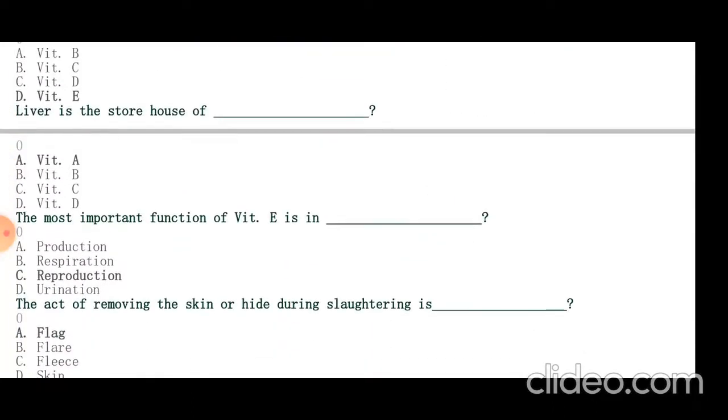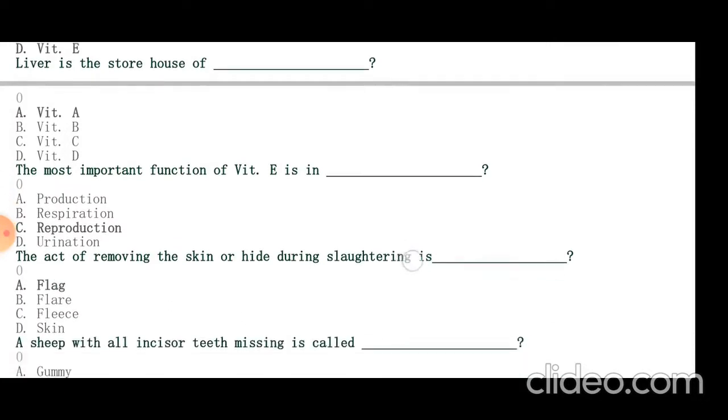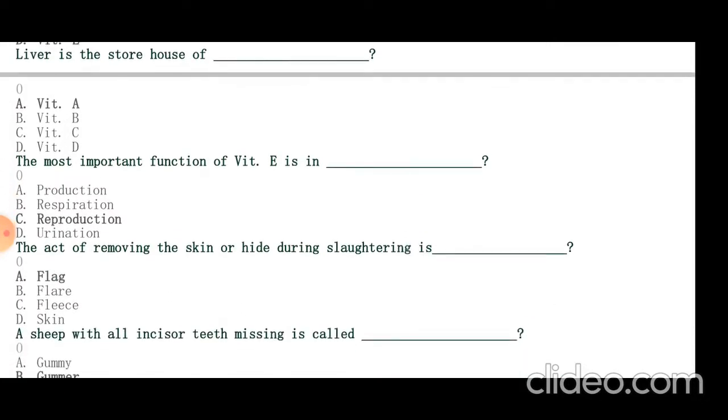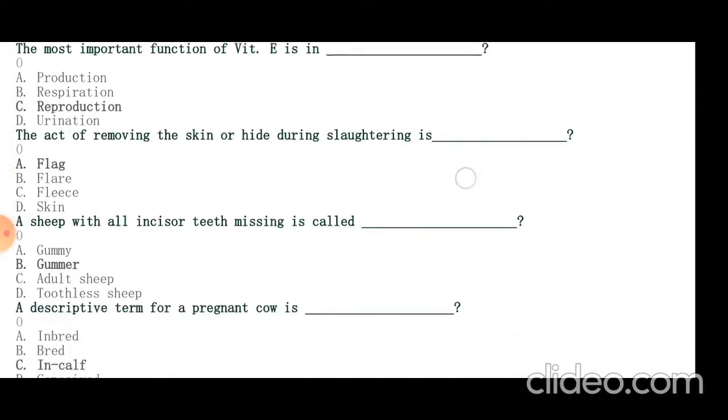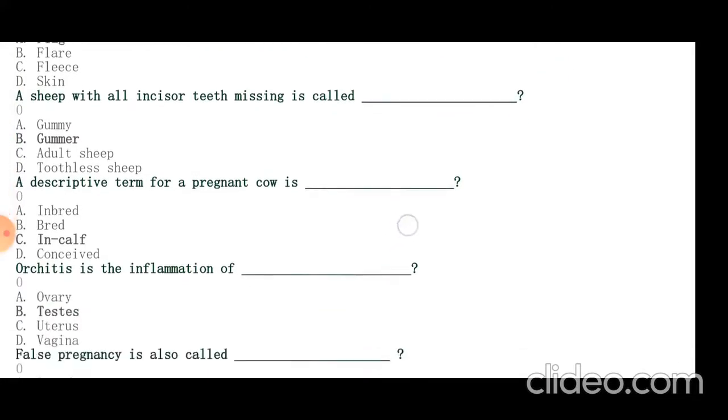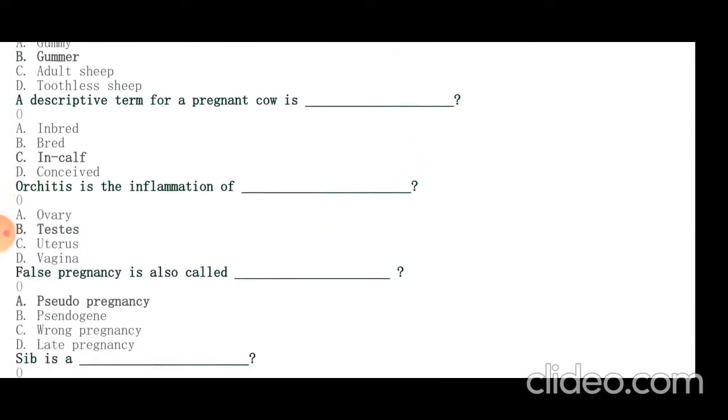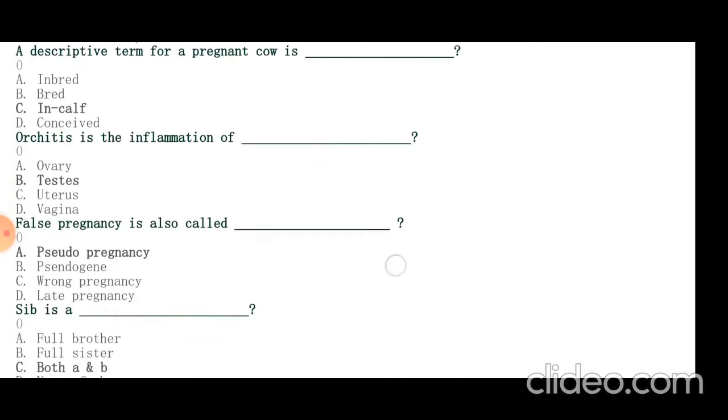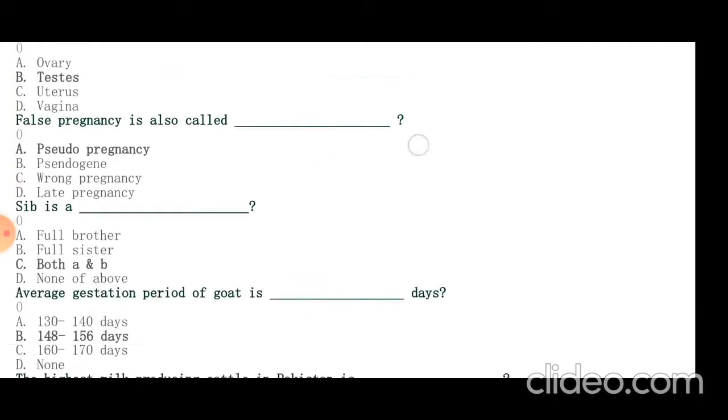The act of removing the skin or hide during slaughtering is flaying. A sheep with incisor teeth missing is called gummer. A descriptive term for a pregnant cow is in-calf. Orchitis is the inflammation of testes. False pregnancy is also called pseudopregnancy. Sib is a full brother and full sister.